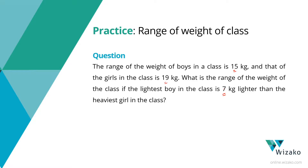The approach I want you to take is to use these three pieces of information. We have four people: the heaviest boy, heaviest girl, lightest boy, and lightest girl. From these three statements about the ranges and the relationship between the lightest boy and the heaviest girl, let's try to plot these four people in ascending order of weights. Once you've achieved that, we've done 75% of the question — then all it takes is to plug in a value for one of those four people and arrive at the heaviest and lightest, and therefore the range.